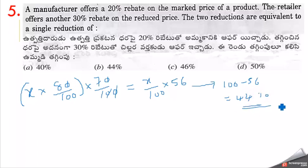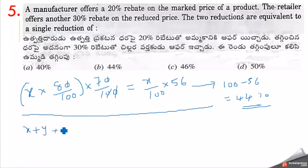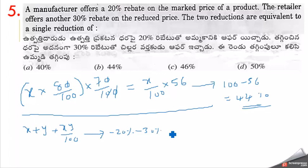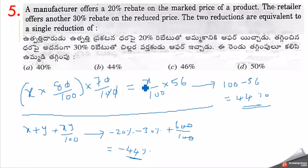The second method uses the formula: x plus y plus xy by 100. First discount is minus 20%, second discount is minus 30%. Applying the formula: minus 20 plus minus 30 plus (minus 20 into minus 30) by 100 equals minus 50 plus 6 equals minus 44%. So 44% discount, answer B.